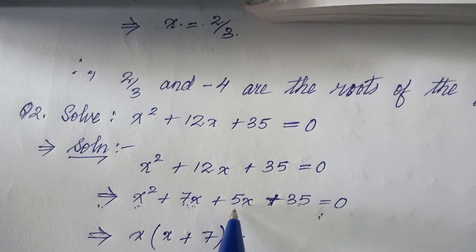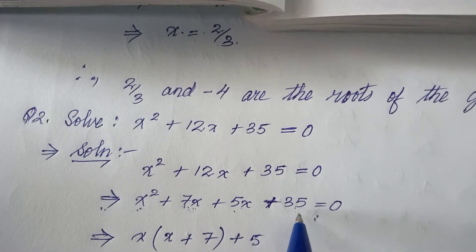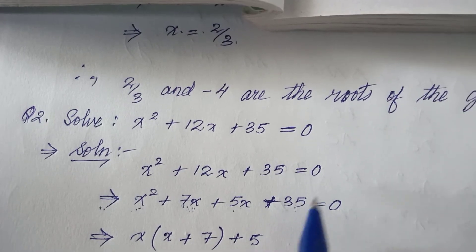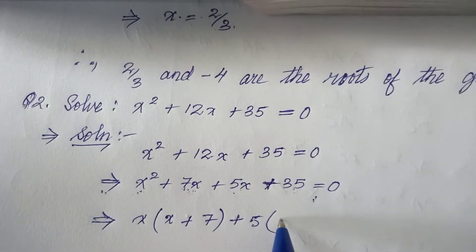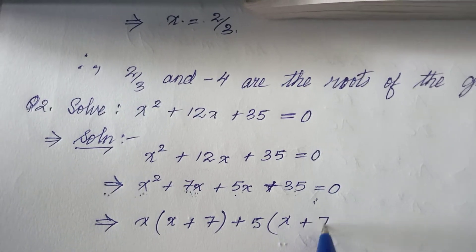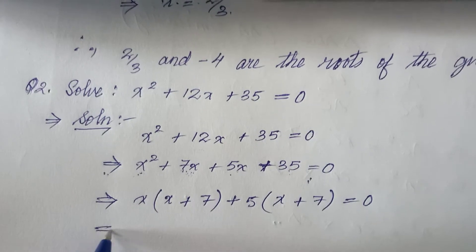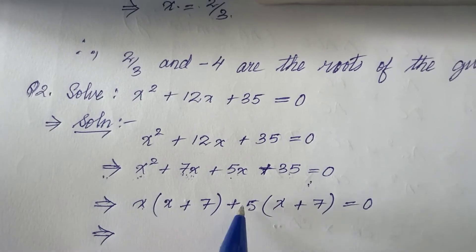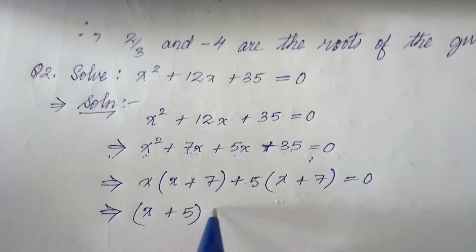Then from the second pair, 5 is common here because 35 does not have any x² or x. So 5 is common, and x + 7 remains. Then I have to put these two together: x + 5 and x + 7, so (x + 5)(x + 7) = 0.